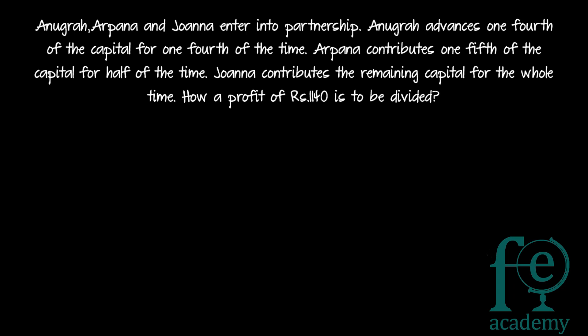So how are they giving the principal? Anigradh is giving one-fourth of the capital for one-fourth of the time, and Arpanna is contributing one-fifth of the capital for half of the time. No exact amount is given — only it is told one-fourth of the capital or one-fifth of the capital. And Johanna is contributing the remaining capital for the whole time.